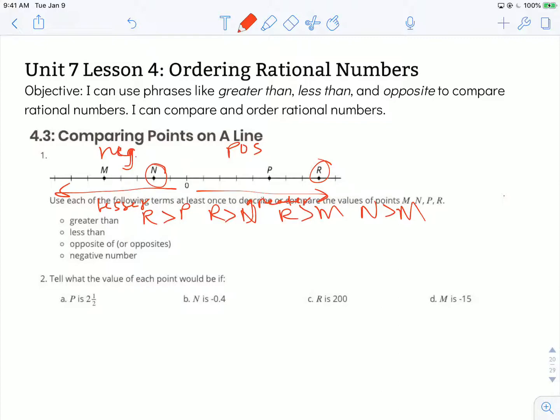Less than. We could start with the one that is the least of these points on this number line, M. M is less than each of these, so we could state that about all of them. But anything that's to the left of another point would be less than. So we could even say that P is less than R even though P is greater than N.